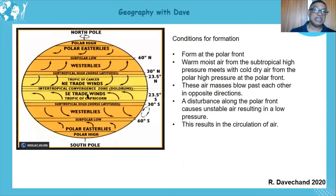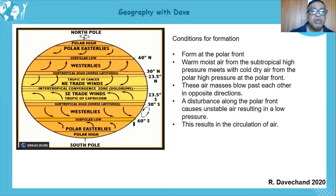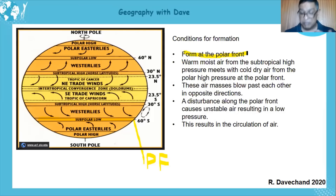Now, how does it form? If we take the sub-polar low, along this area is the polar front. The polar front is not totally stationary, although on many occasions it can be considered stationary. The mid-latitude cyclone forms at the polar front. Warm moist air from the subtropical high moves toward the sub-polar low.